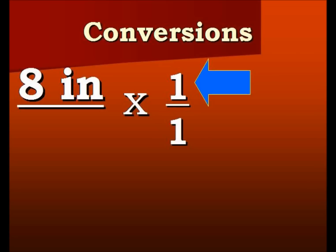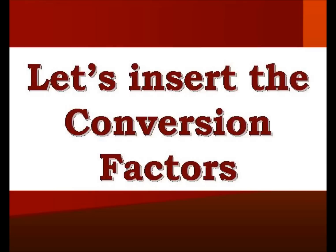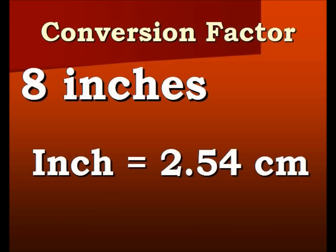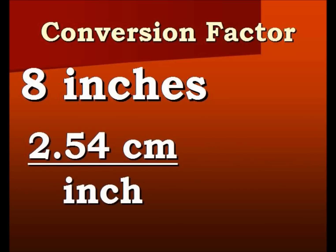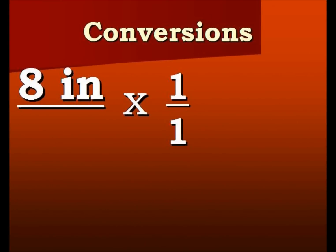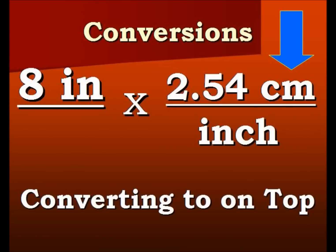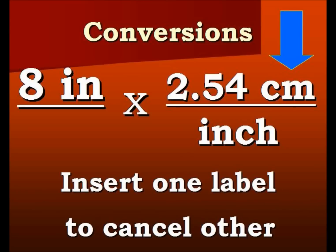The top part is multiplication, the bottom part of the fraction is division. We're going to insert our conversion factor because all we're doing is multiplying and dividing by 1 — we're not changing the value. We turn the conversion factor into a fraction, with what we're converting to on top. Getting back to our board, we put in our conversion factor, noticing what we're converting to is on top. We want to remove the inches because we're converting to centimeters.